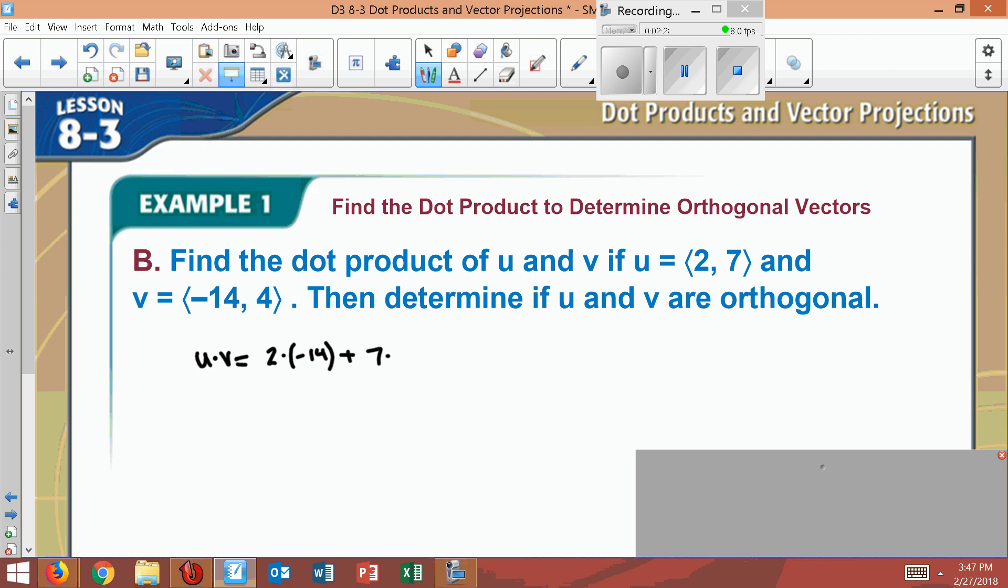Plus Y1, which is 7, times Y2, which is 4. So if we multiply these two, we get negative 28 plus 28. This equals 0.